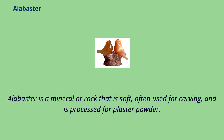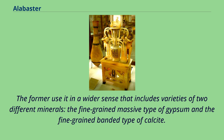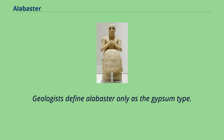Alabaster is a mineral or rock that is soft, often used for carving, and is processed for plaster powder. Archaeologists and the stone processing industry use the word differently from geologists. The former use it in a wider sense that includes varieties of two different minerals: the fine-grained massive type of gypsum and the fine-grained banded type of calcite. Geologists define alabaster only as the gypsum type.